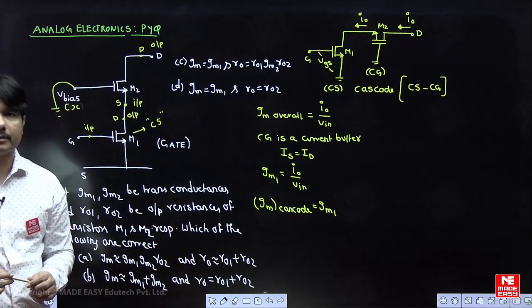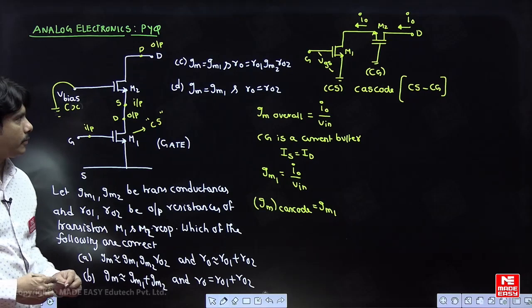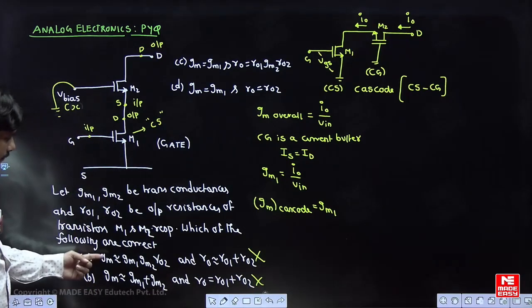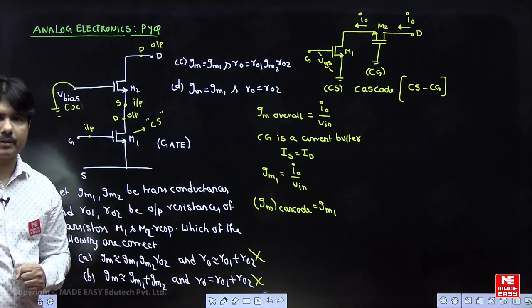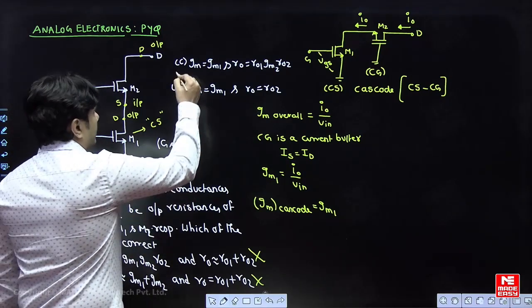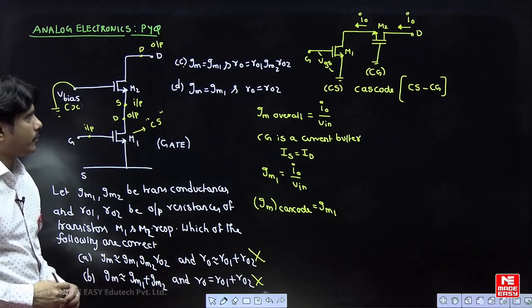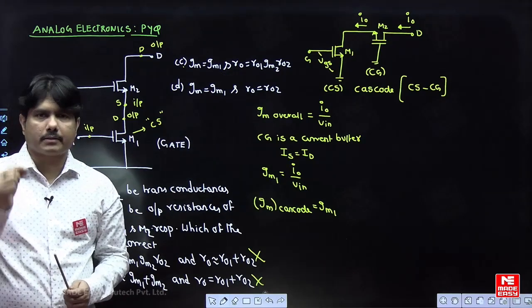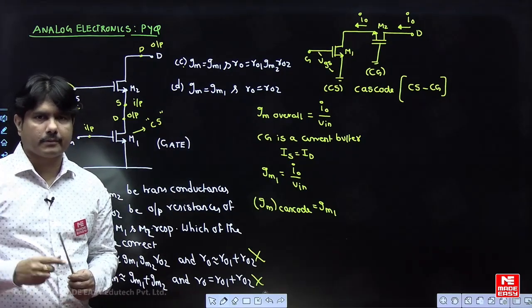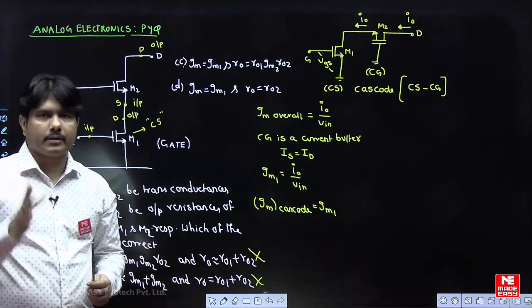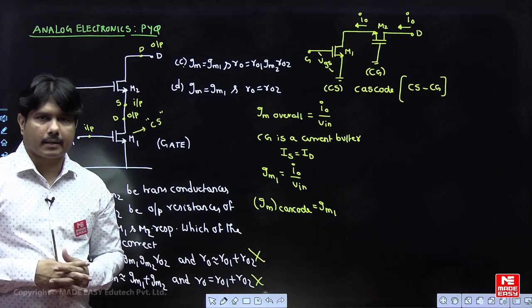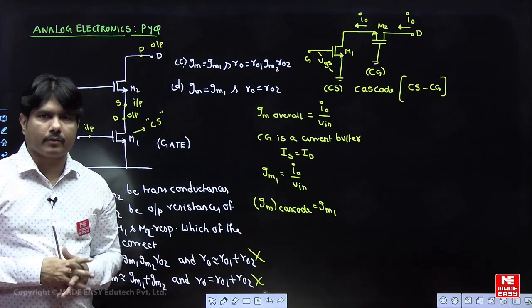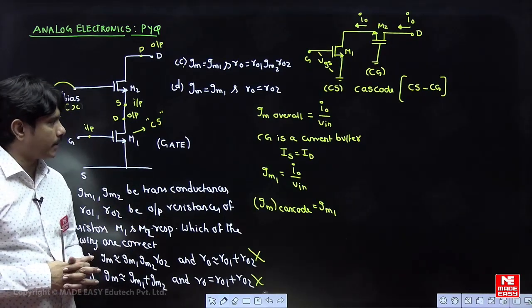So the answer for GM is GM1, which means the first two answer options are wrong. Only two options remain, and to distinguish between them we need to find R0. In one option R0 is given as R01·GM2·R02 (approximate), and in the other only R02. We cannot do full AC analysis in a GATE exam — we need a trick. Let me show you what knowledge is required.